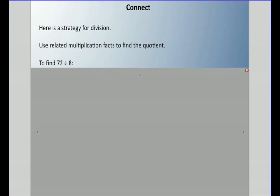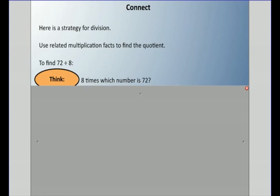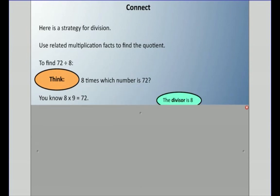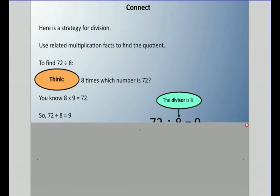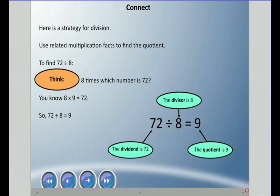So if you need to find 72 divided by eight, you could think: what is eight times something that equals 72? Well, I know eight times nine is 72, so 72 divided by eight equals nine. For eight times nine equals 72: eight is a factor, nine is a factor, and 72 is the product.